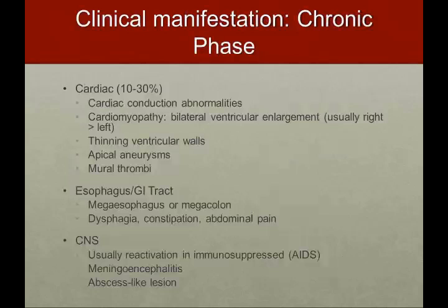20 to 30% of infected patients actually become chronic, and 10 to 30% of these patients have cardiac manifestations — the most common organ involved. Mainly you get cardiac conduction abnormalities. Cardiomyopathy is very common as well: bilateral ventricular enlargement, usually the right side greater than the left, thinning of the walls, apical aneurysms, and mural thrombus, which can also cause thromboembolic events. The second organ system is the GI tract, causing megaesophagus or megacolon. Patients usually have dysphagia, constipation, or abdominal pain. The third manifestation — usually rare — is CNS disease, found in immunosuppressed patients with full-blown AIDS, manifesting as meningoencephalitis with abscess-like lesions.